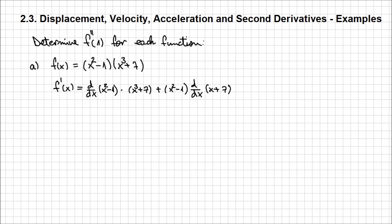And now let's determine the derivatives of those expressions. We're going to have 2x, that's the derivative of the first expression times x at power 3 plus 7 plus x square minus 1 times 3x square is the derivative of the second expression.